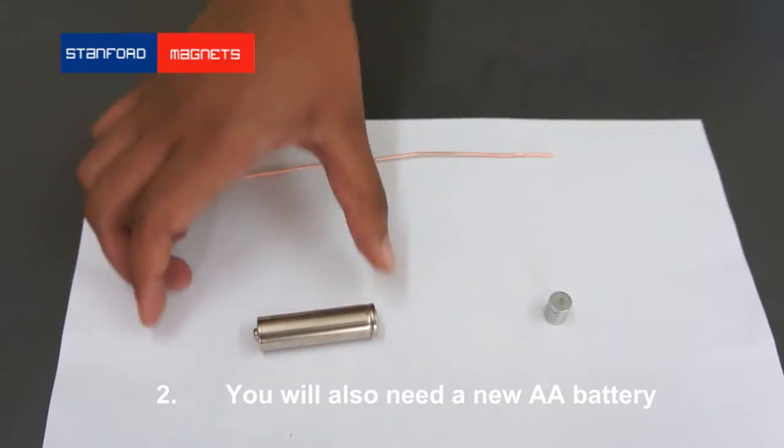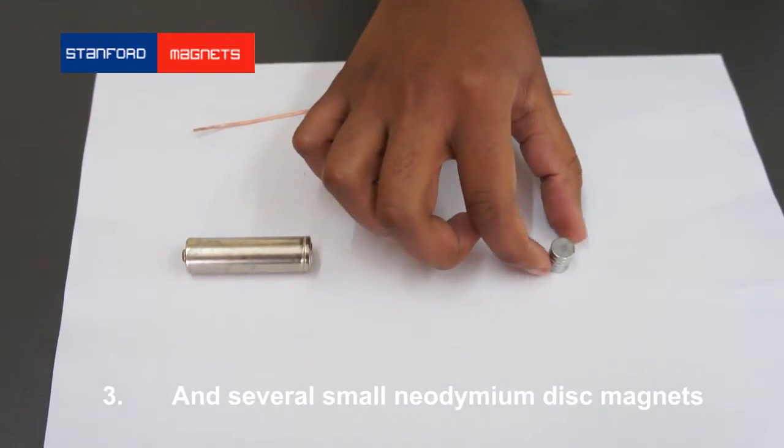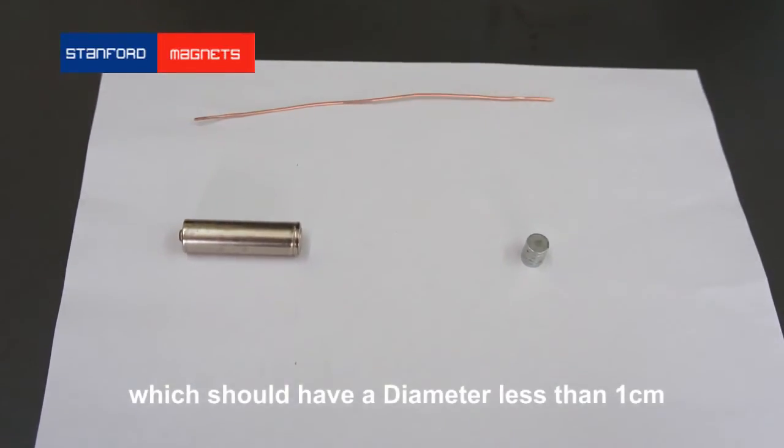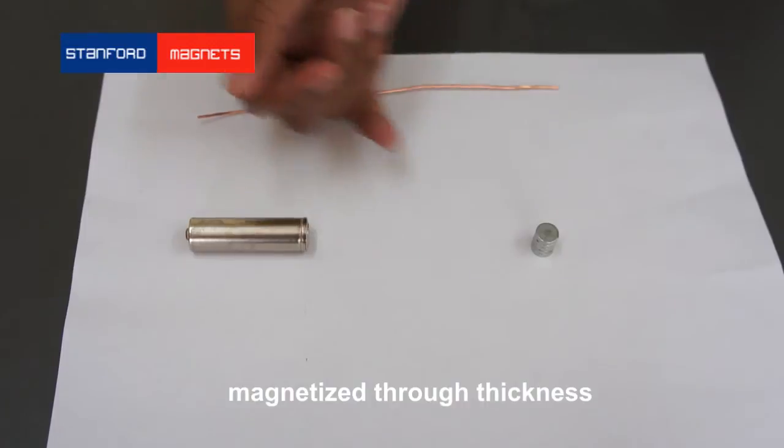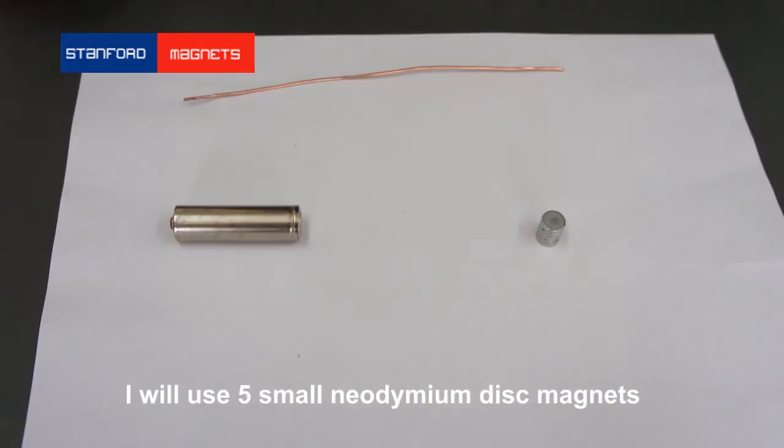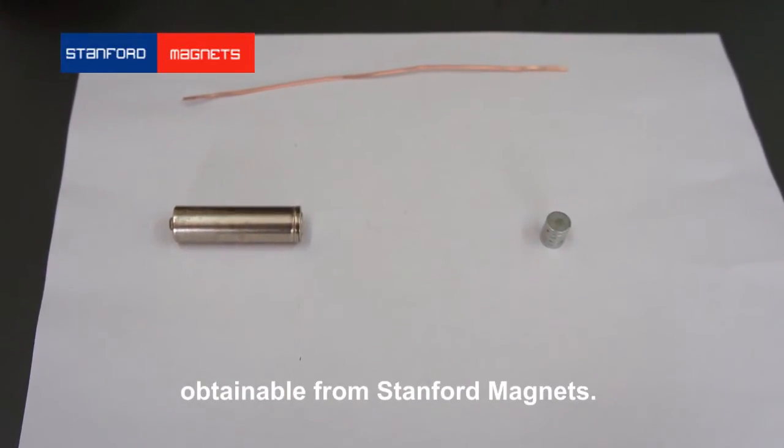You will also need an AA battery and several neodymium disc magnets, which should have a diameter less than 1 centimeter magnetized through thickness. It shouldn't be more than 1 centimeter thick. I will use 5 small neodymium disc magnets obtained from Stanford Magnets.